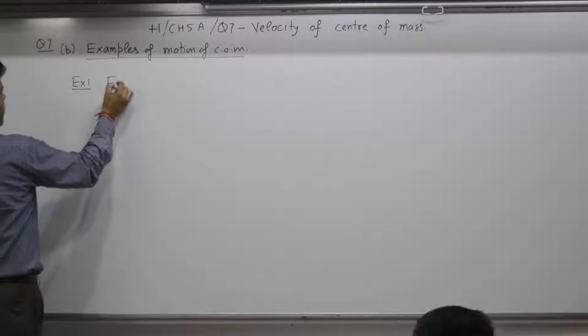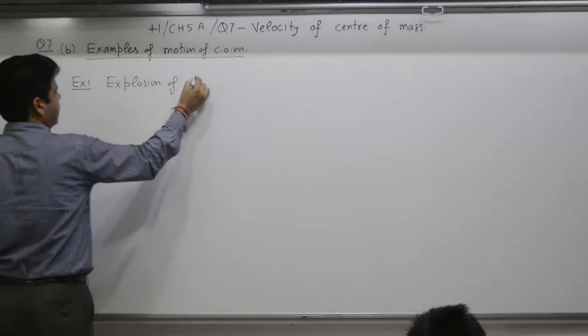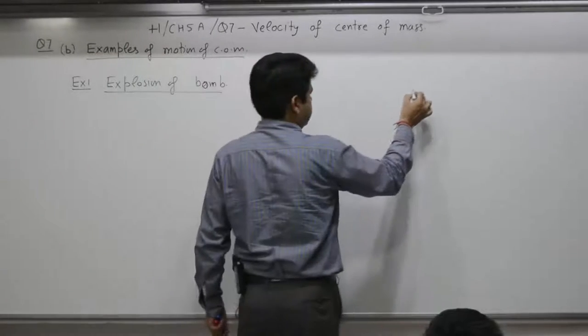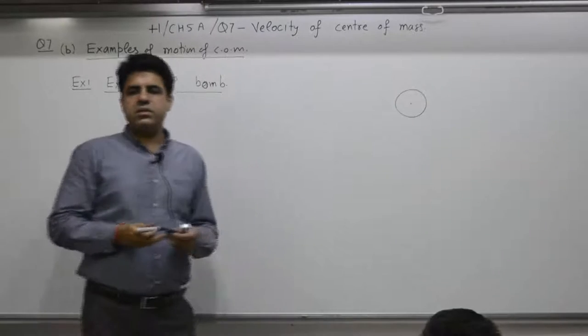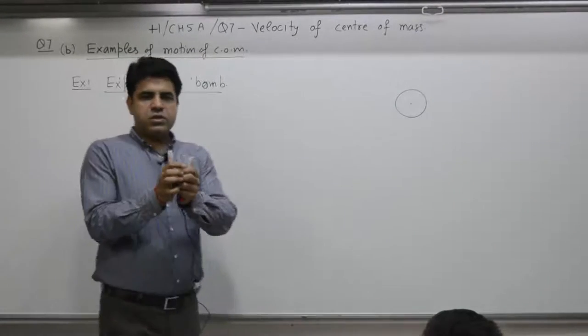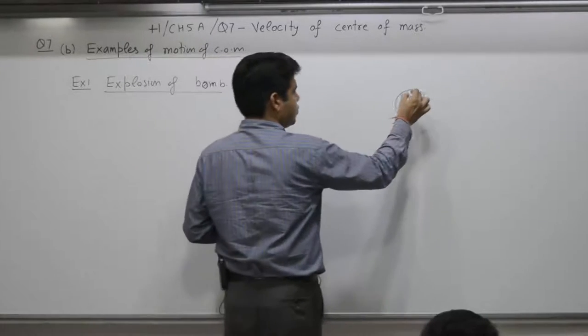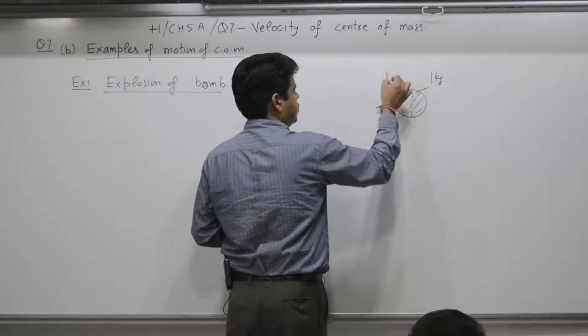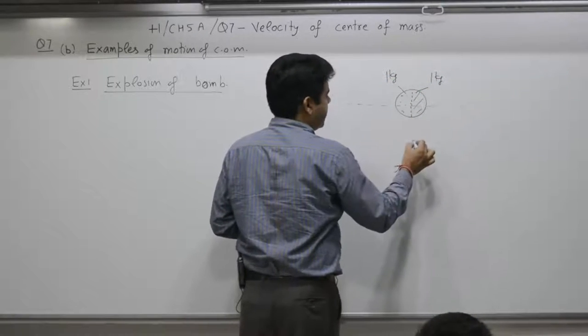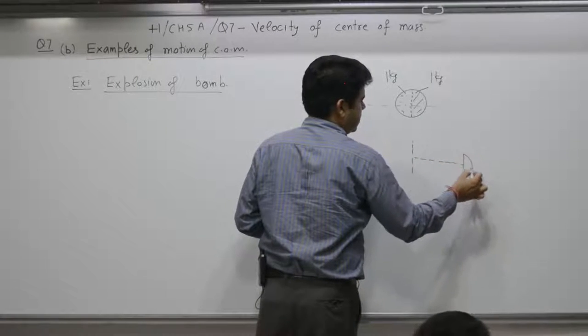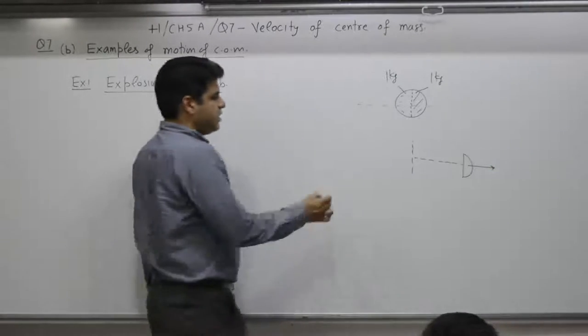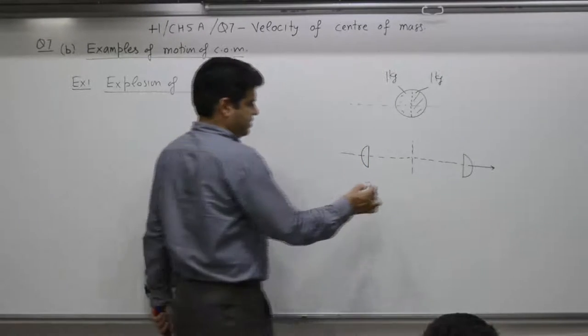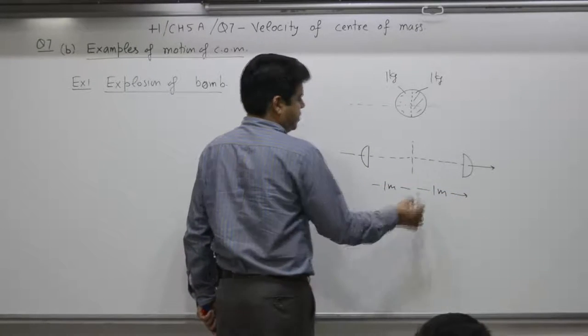Example one, explosion of a bomb. A bomb is at rest. There is a center of mass. What is the velocity of the center of mass? 0. When a bomb explodes, it is number of pieces. But here, we take this bomb explodes into two equal parts. This is 1 kg, this is also 1 kg. If one part moves to the right, question is, the other part will move to the left. From center of mass point of view, if it is covered distance 1 meter to the right, the other particle covers 1 meter to the left.